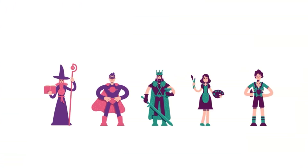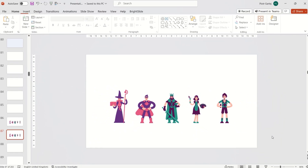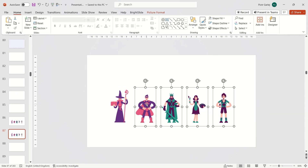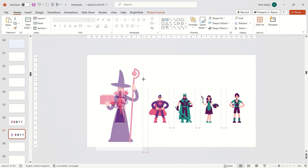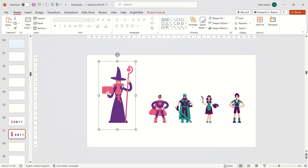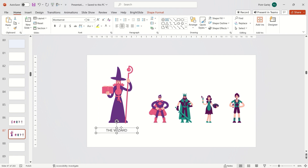Another application of the Morph function: I found these cartoonish images on Freepik and placed them next to each other on the slide. I'd like to animate them using Morph. So here's what I can do: I enlarge one of them, add a caption, duplicate the slide, and then do the same with the next characters.